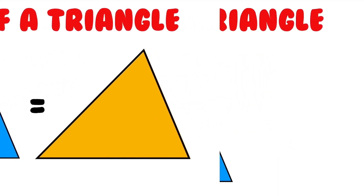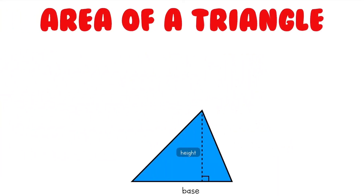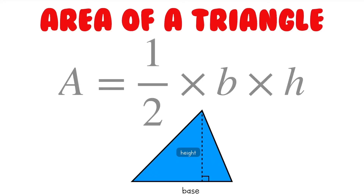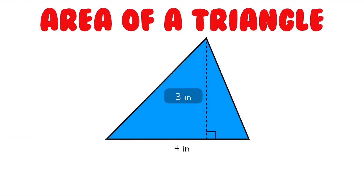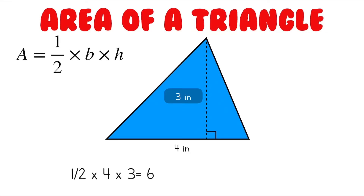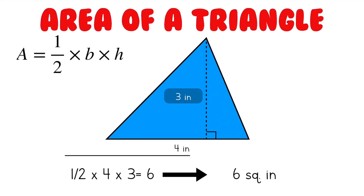This leads us to our formula for finding the area of a triangle. Since exactly two triangles with the same dimensions fit inside their corresponding rectangle, the area of a triangle is one half of the rectangle, making our formula one half times the base times the height. Let me work through the first triangle with you. This triangle has a base of 4 inches and a height of 3 inches. If we plug in our numbers into the formula, we get one half times 4 times 3, which is 6. Since our triangle's dimensions are in inches, we label our answer with square inches, giving us a final answer of 6 square inches.